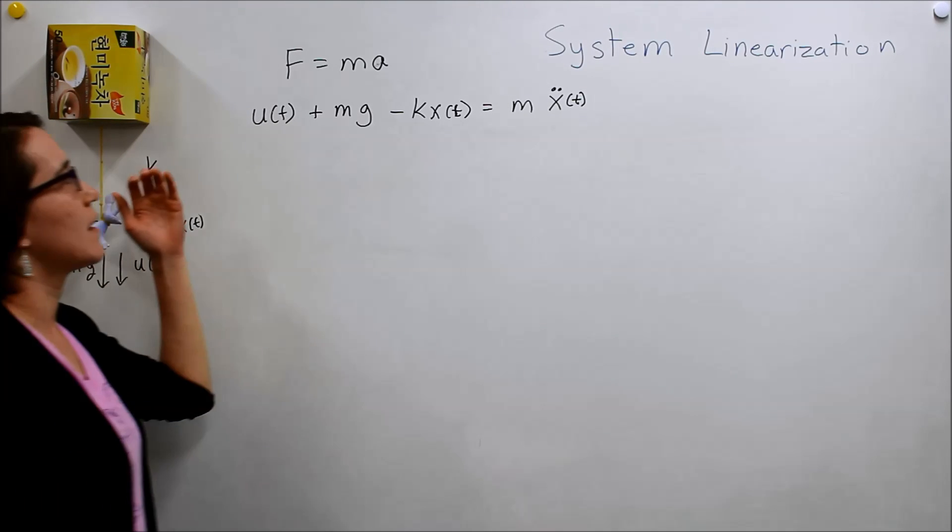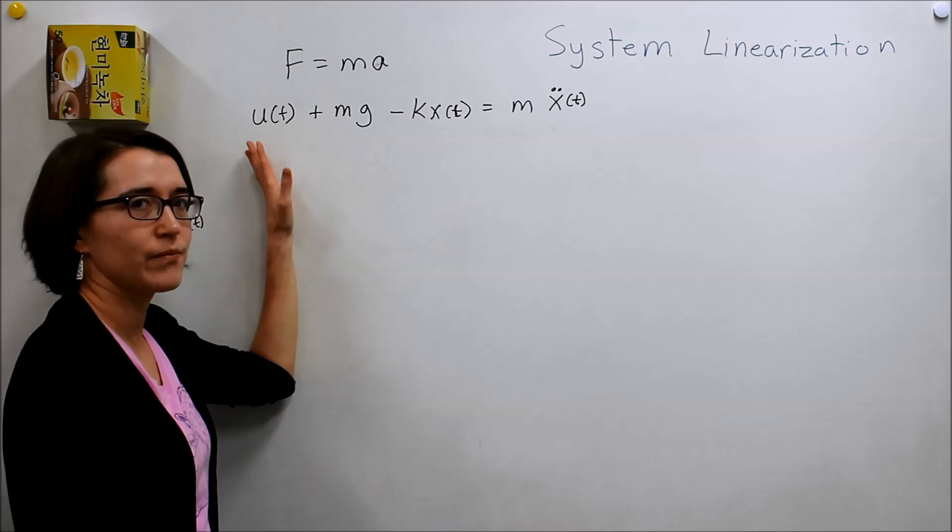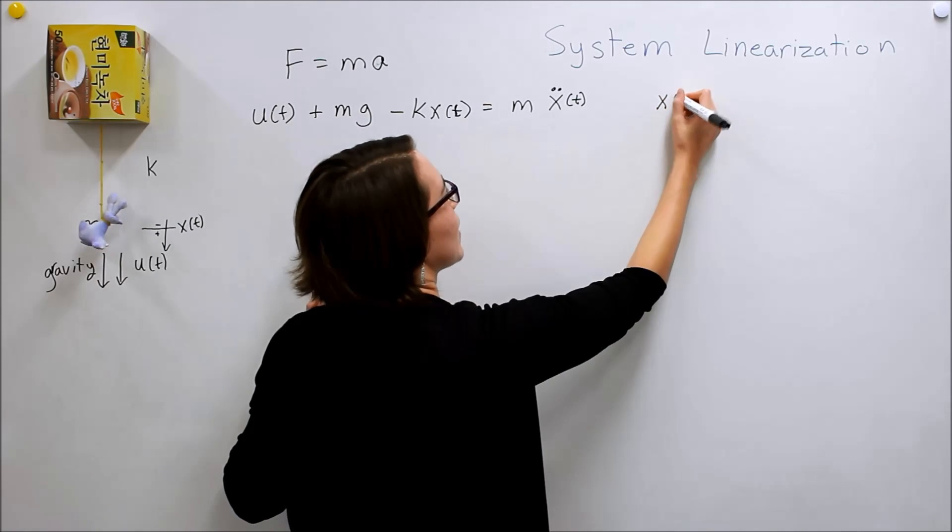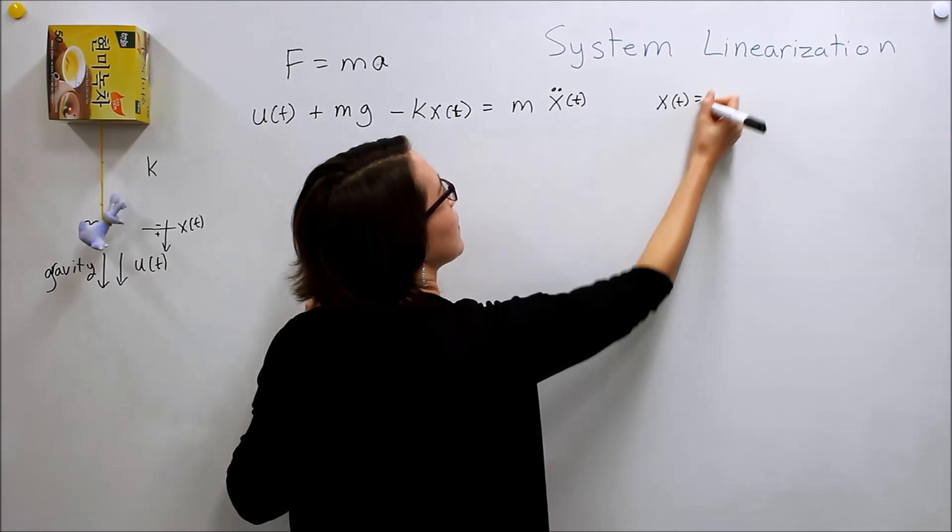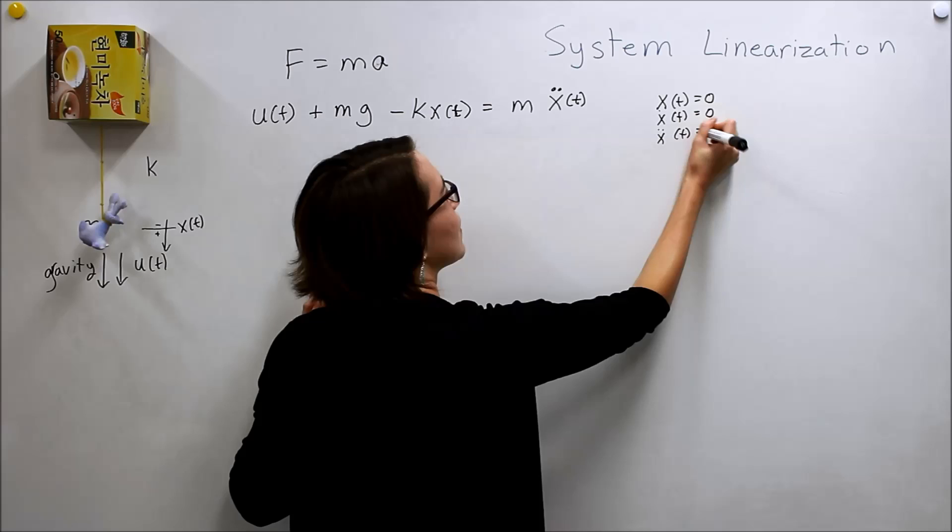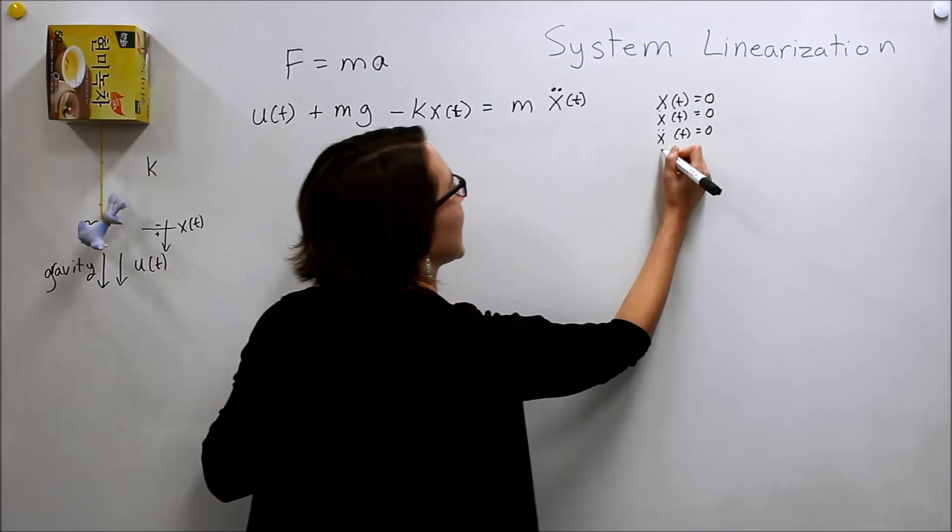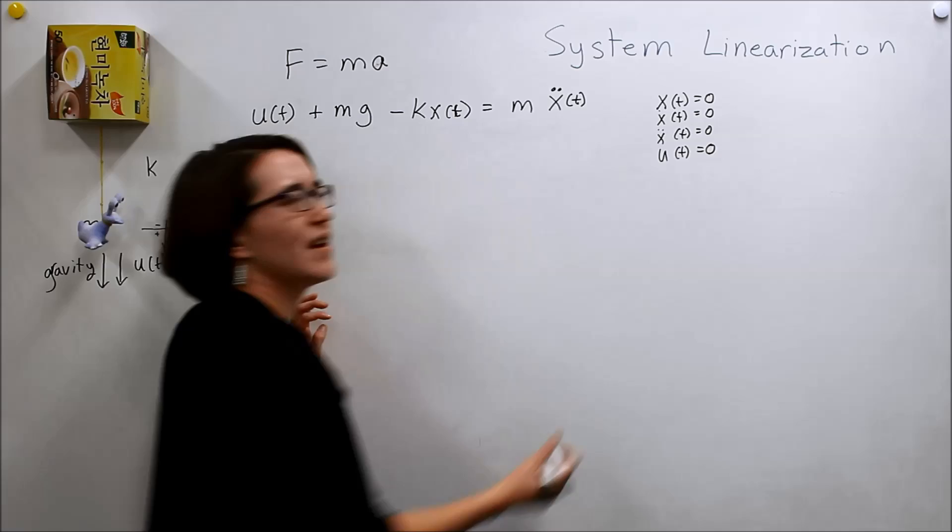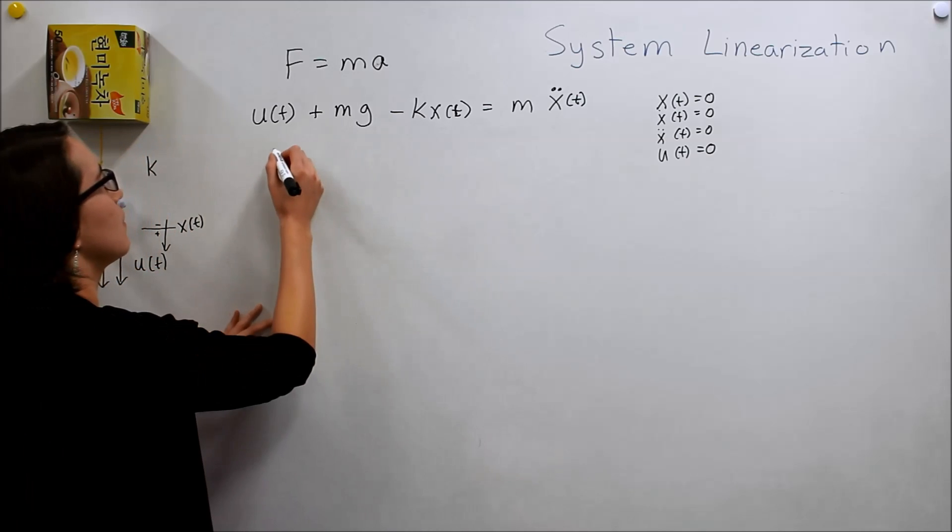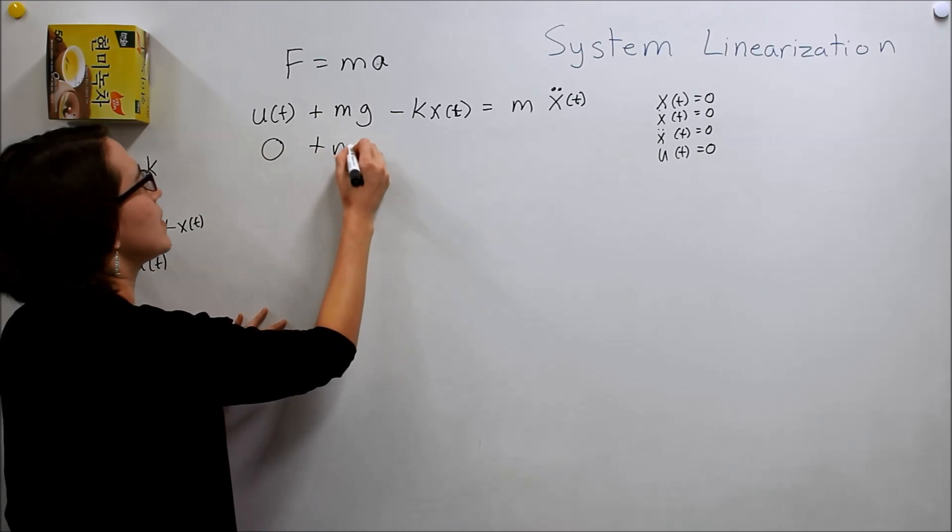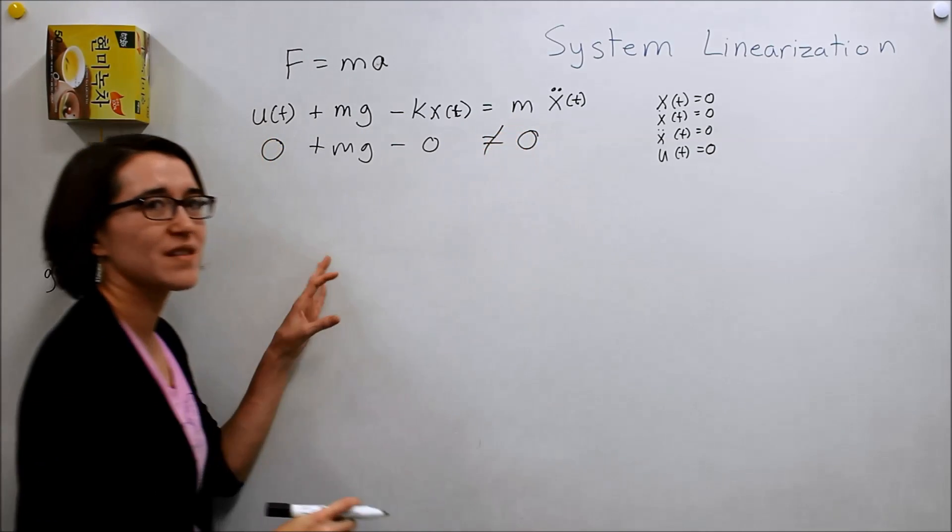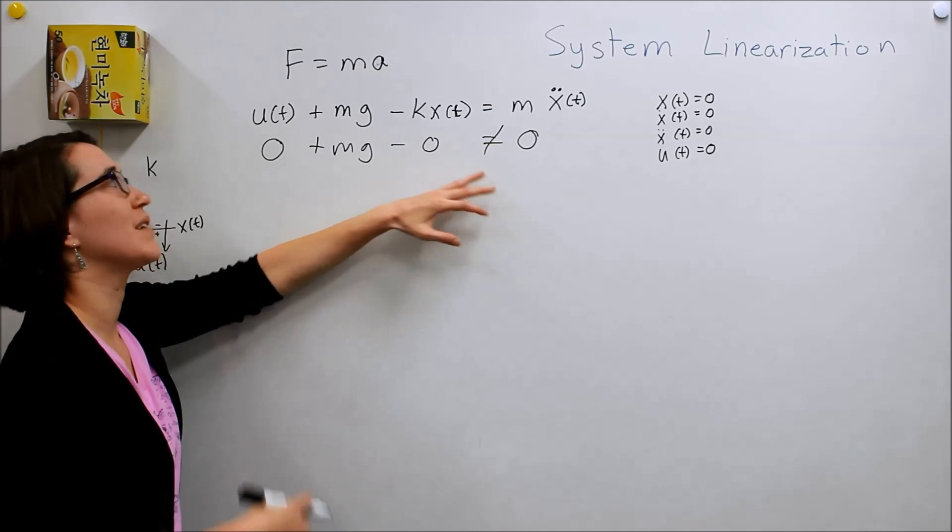And we'll see that this is non-linear. And we can tell because if we have a linear system and its input, so x of t is equal to zero and x dot of t is equal to zero, x double dot of t is equal to zero, everything's at rest and our input is equal to zero, then our system should be zero. But if we plug these values in here, we would get zero plus mg minus zero equals zero. No, this is not true.